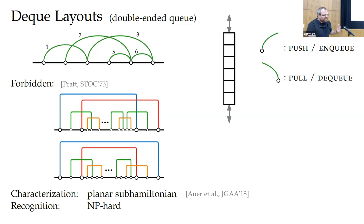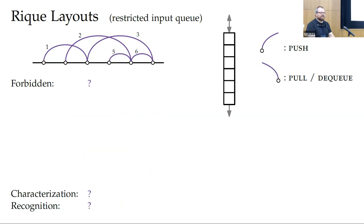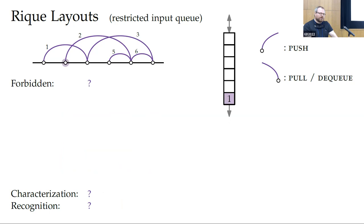We look at something similar but different: restricted input queues (requeue layouts). We remove one freedom — we cannot add at the bottom anymore; we always add at the top, but we can remove from both sides. Verifying the same layout is easier: we always push everything to the top, and at each point just check whether we can remove the edge from the top or bottom. We can remove two and five from top and bottom, so this works.